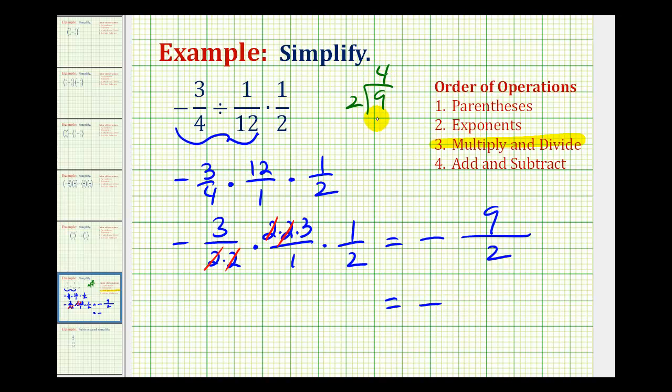Well, there are four twos in nine. Four times two is eight, with a remainder of one. So as a mixed number, we would have negative four and one-half.